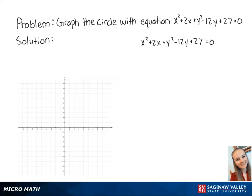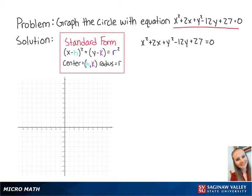For this problem, we want to graph the circle with equation x squared plus 2x plus y squared minus 12y plus 27 equals 0. First, we need to put the equation into standard form. To do this, we need to complete the square for x and for y.